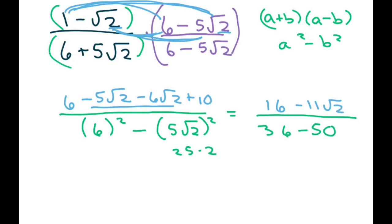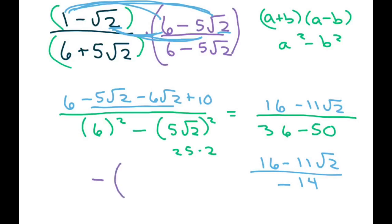Our final answer is 16 minus 11 square root of 2, and 36 minus 50 is negative 14. We usually don't like to keep the negative in the denominator, so we pull it out and write this as negative times 16 minus 11 square root of 2 over 14. It doesn't matter if the negative is in the numerator or the denominator.